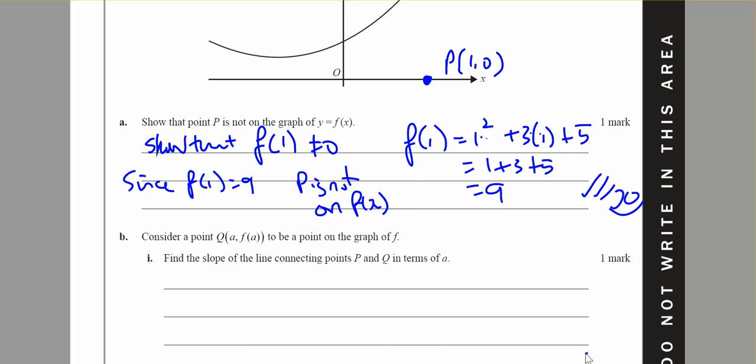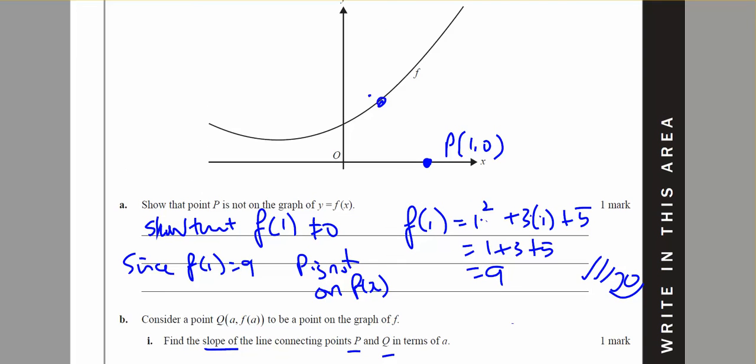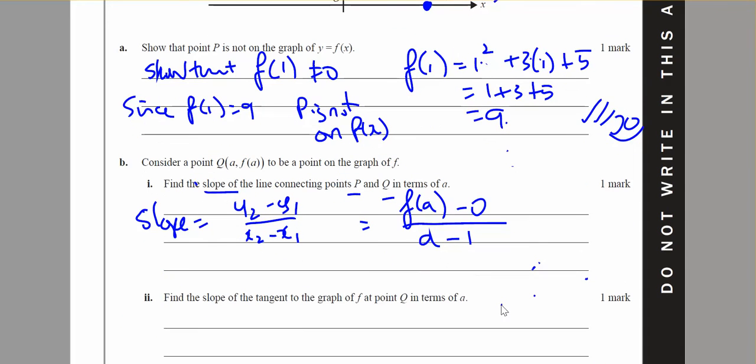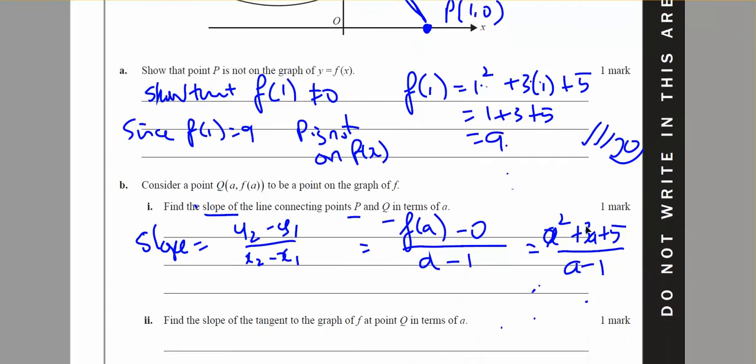Okay in part B, consider the point to be on the graph. Find the slope of the line connecting P and Q. I'm going to put point Q there, where Q has the coordinates a and f of a. And the slope will be the gradient between the two. So the slope will be y2 minus y1 over x2 minus x1. Y2 is going to be f of a minus 0 over a minus 1. And f of a is, so it's going to equal a squared plus 3a plus 5 all over a minus 1. So there is my slope.